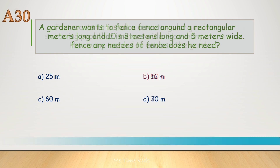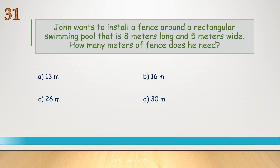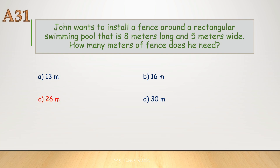John wants to install a fence around a rectangular swimming pool that is 8 meters long and 5 meters wide. How many meters of fence does he need? Correct answer is C, 26 meters.